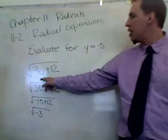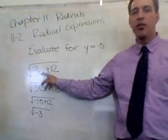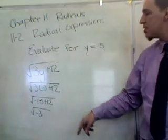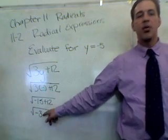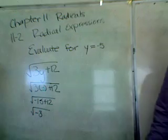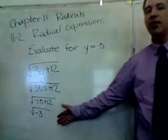Okay, this one is number 4. It's the square root of 3y plus 12 for y equals negative 5. We simply plug in negative 5 for y, and we get negative 15 plus 12. That gives us the square root of negative 3. Well, now what do we do? What's the square root of a negative number?